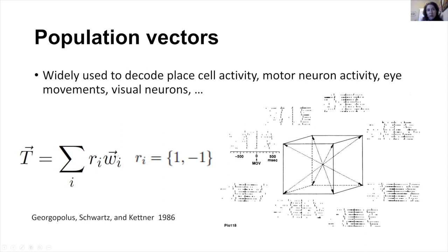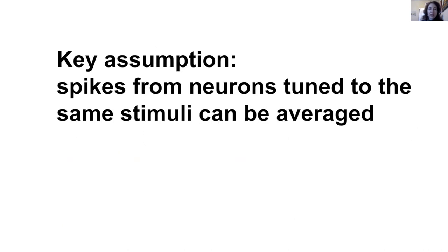However, because it's such an appealing approach, it was also tested in detail. People found that it cannot be the whole story. One key assumption that was tested is that spikes from neurons tuned to the same stimulus can be averaged — that only the receptive field matters, not the identity of the neuron.